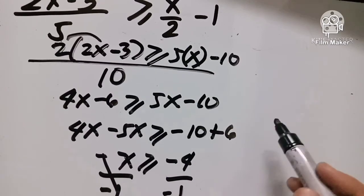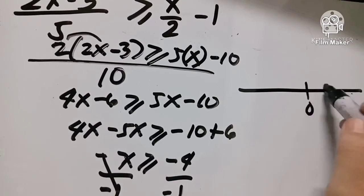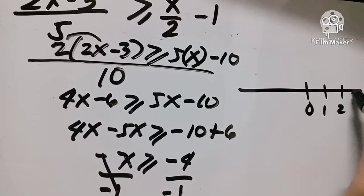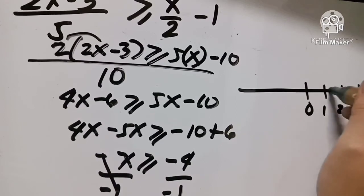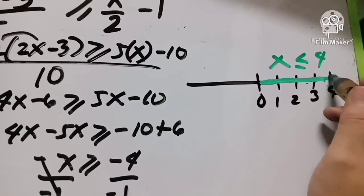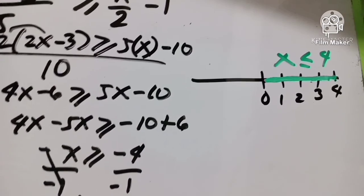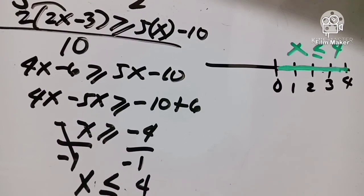How do we graph X less than or equal to 4? We draw a number line: 0, 1, 2, 3, 4. Since X is less than or equal to 4, we place a closed circle at 4 and the line goes to the left. That is our final answer: X less than or equal to 4. Thank you, guys — I hope you enjoyed the video. Thank you!